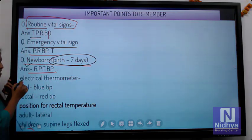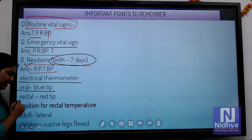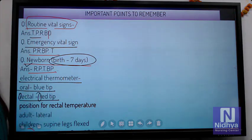Next, you have electrical thermometer. It has a steel portion and a blue portion. For rectal, we use a different tip, and for axillary or oral, we use a different tip. Oral - blue tip, rectal - red tip. This is a very important question asked in central level examinations.